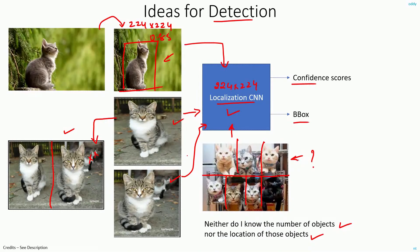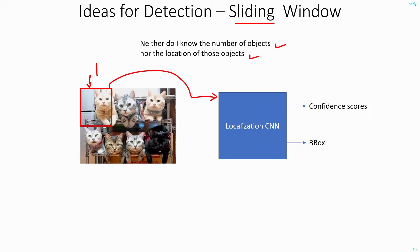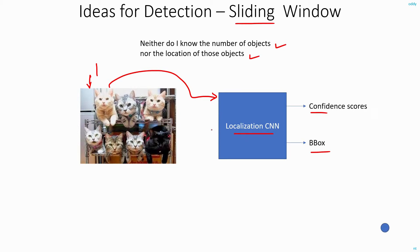We have already discussed this technique several times. What I can do is use the sliding window technique. Since I don't know the number of objects or their locations, I'll scan the image by taking crops at all possible locations. Starting with an initial window, I'll take a crop, resize, and feed it to my localization network. Then I move the sliding window slightly to the right, take that crop, and feed it to the network. I run the localization framework at all possible locations, getting confidence scores and bounding boxes for each, and this way I can do object detection by reusing the localization framework.